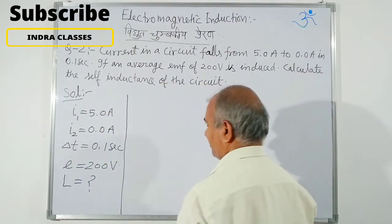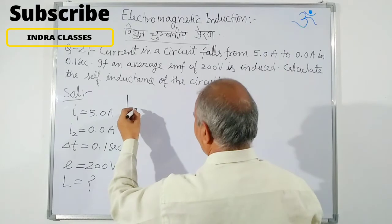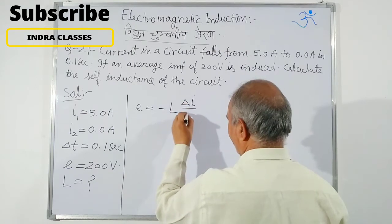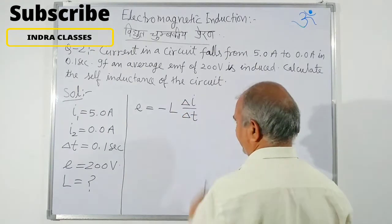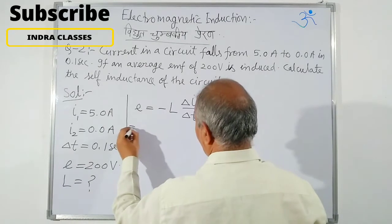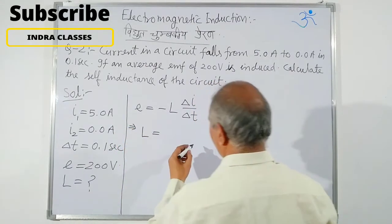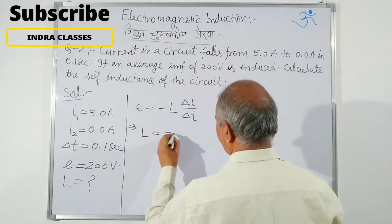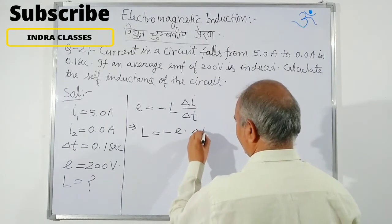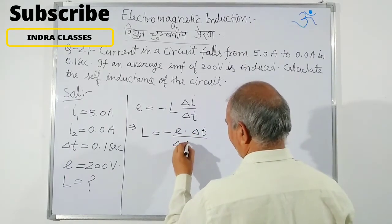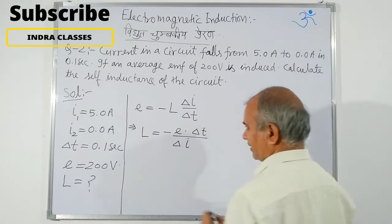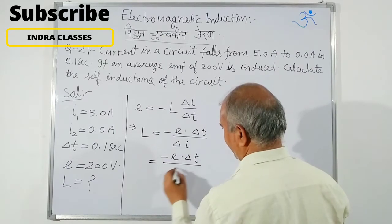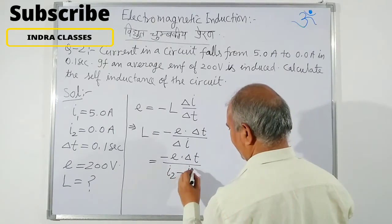The formula we have studied is: E = −L(ΔI/ΔT). Rearranging, L = −E·ΔT / ΔI, which equals −E·ΔT / (I2 − I1).